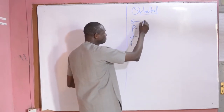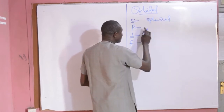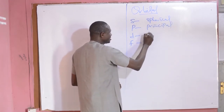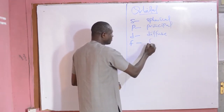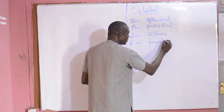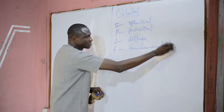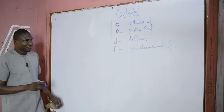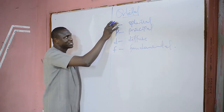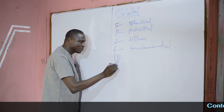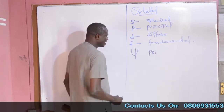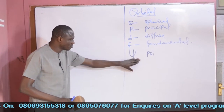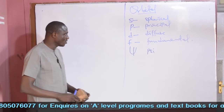The S has a full meaning which is known as spherical, abbreviated as S. The P is principal. The D is diffuse, while the F means fundamental. These are the meanings of the common orbitals that we have. The mathematical representation of an orbital is what we know as psi. That is, if you want to quantify the amount of electrons or in terms of quantum classical models, we have what we call psi.